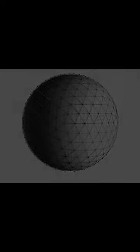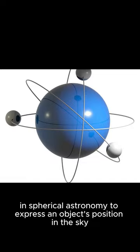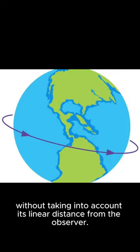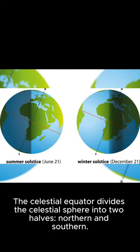The celestial sphere is a conceptual tool used in spherical astronomy to express an object's position in the sky without taking into account its linear distance from the observer. The celestial equator divides the celestial sphere into two halves, northern and southern.